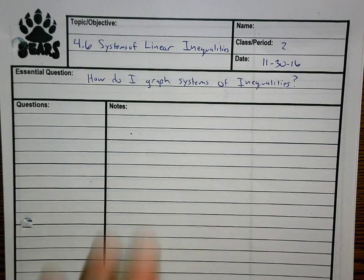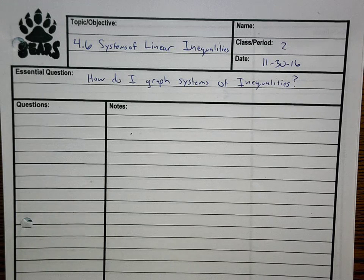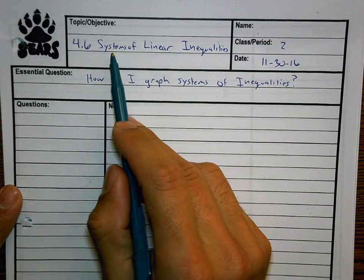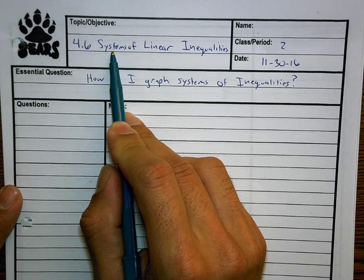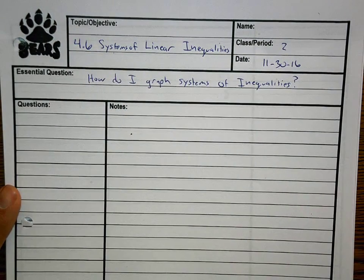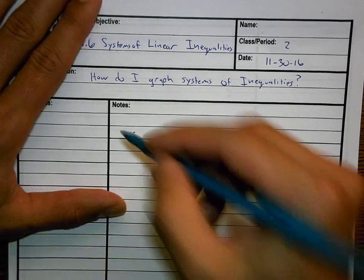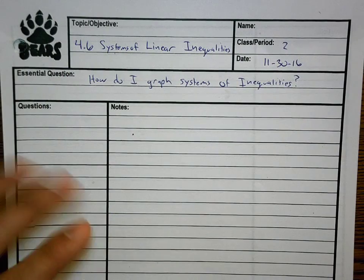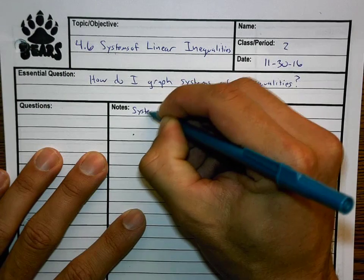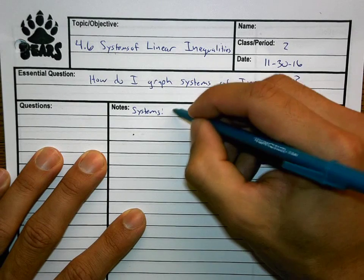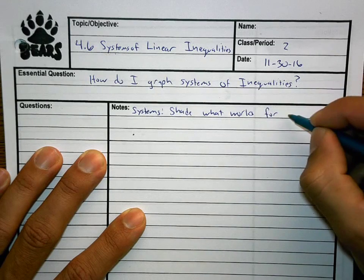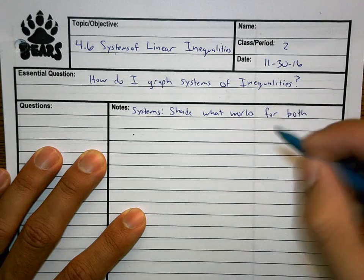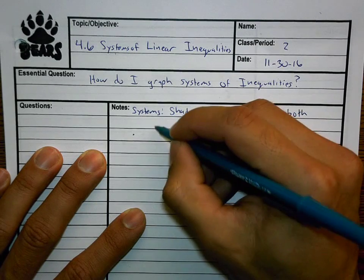4.6 is very similar to 4.5, they have the same concepts except now we're talking about a system. Earlier we talked about what systems mean - system means two or more. So when we graph systems, we have to remember we have to do what works for both. We have to shade what works for both inequalities.